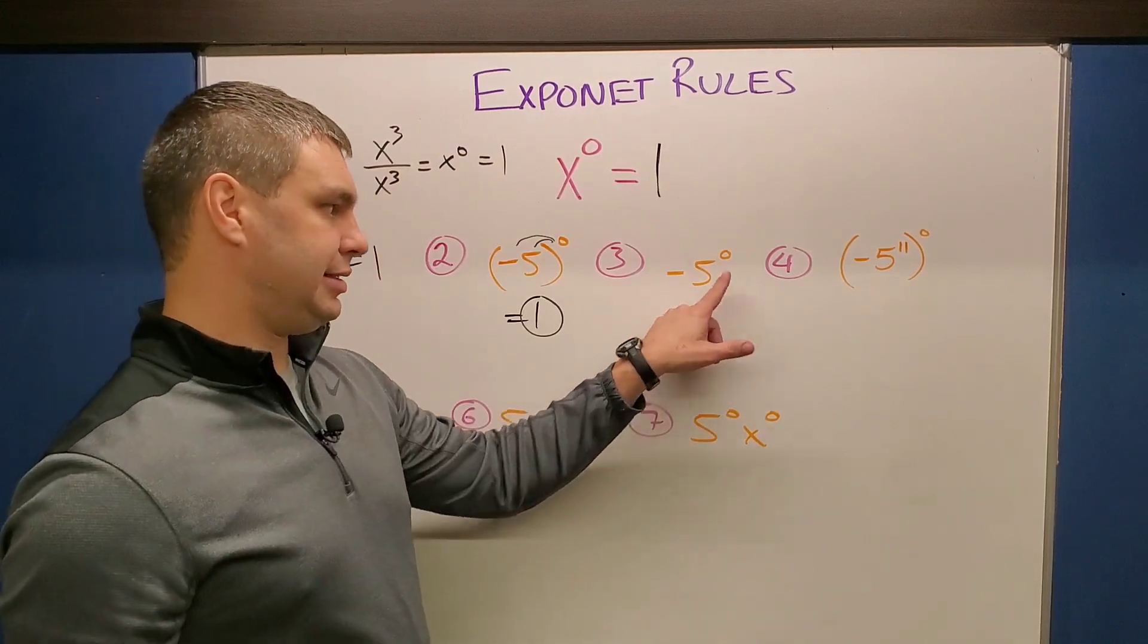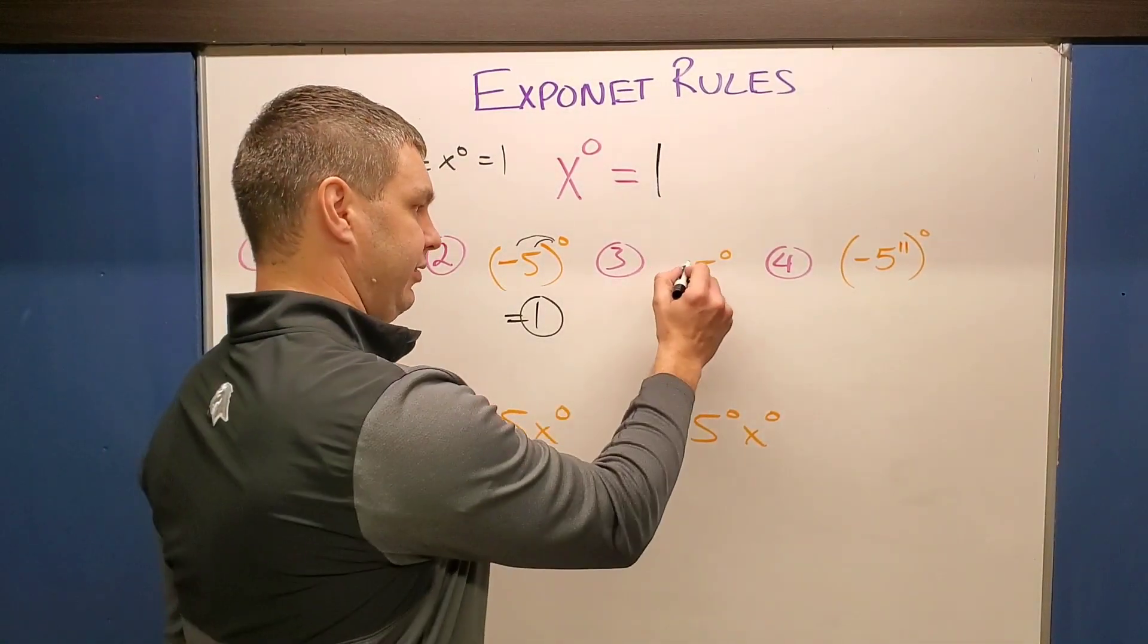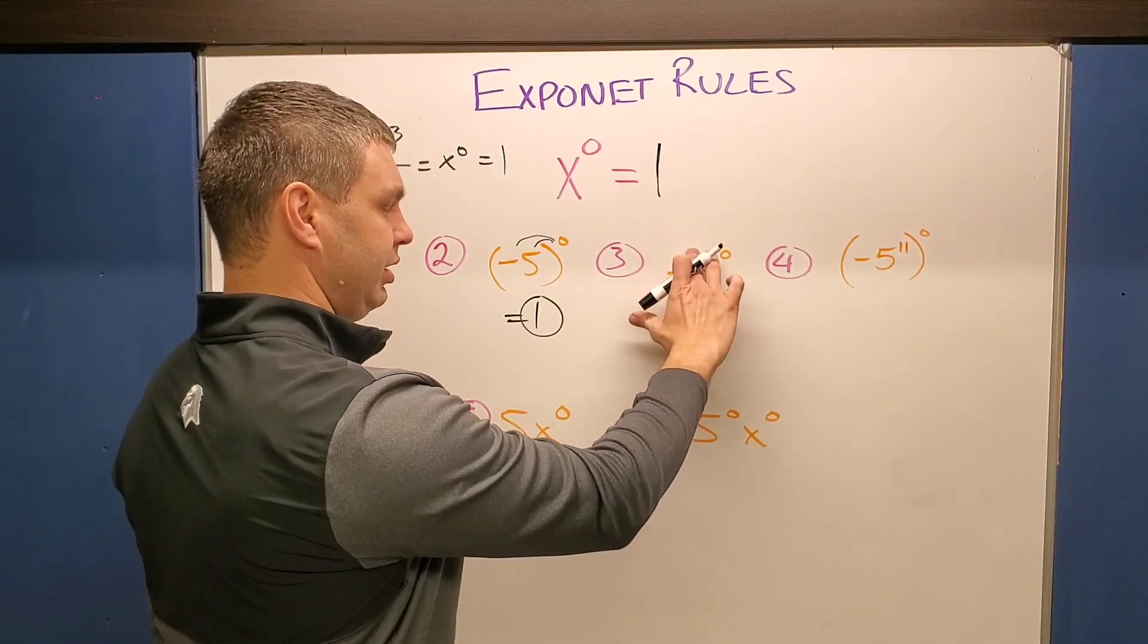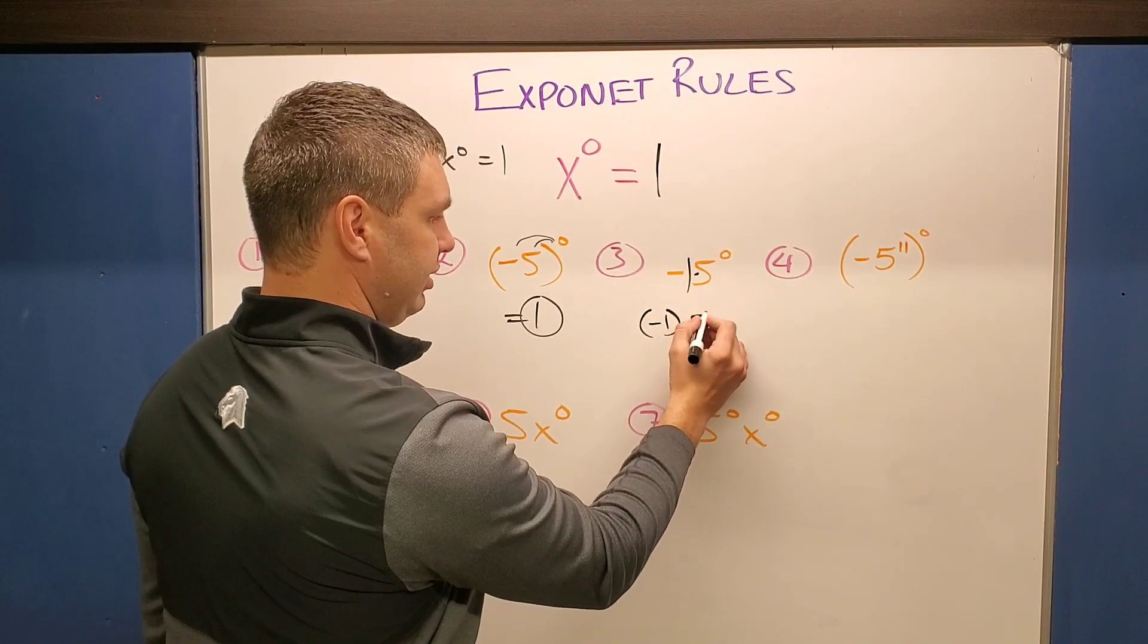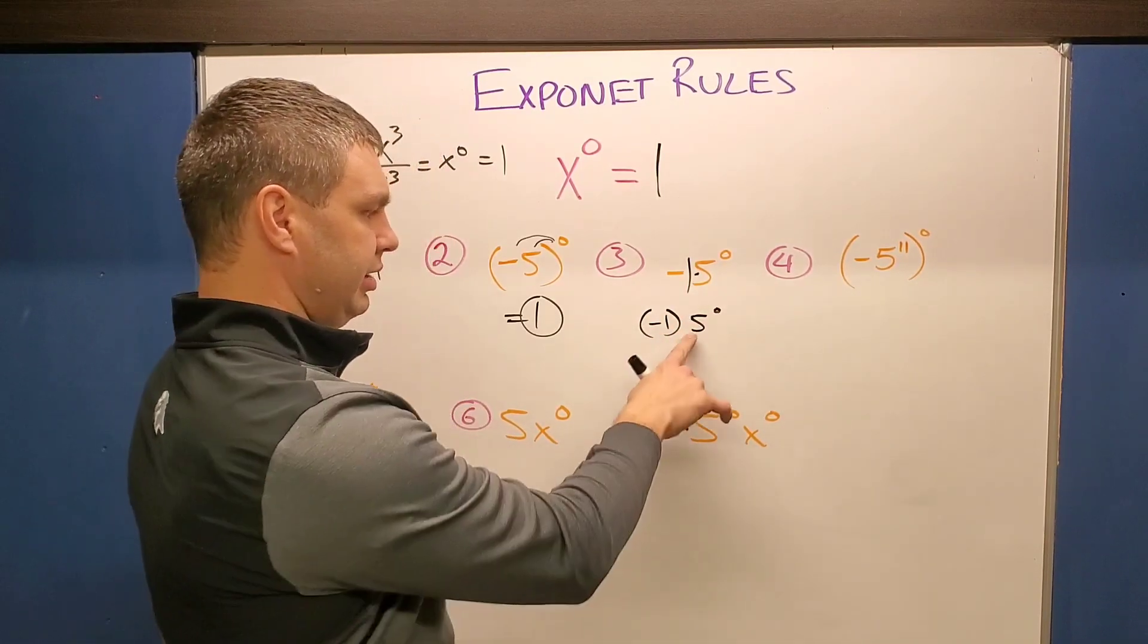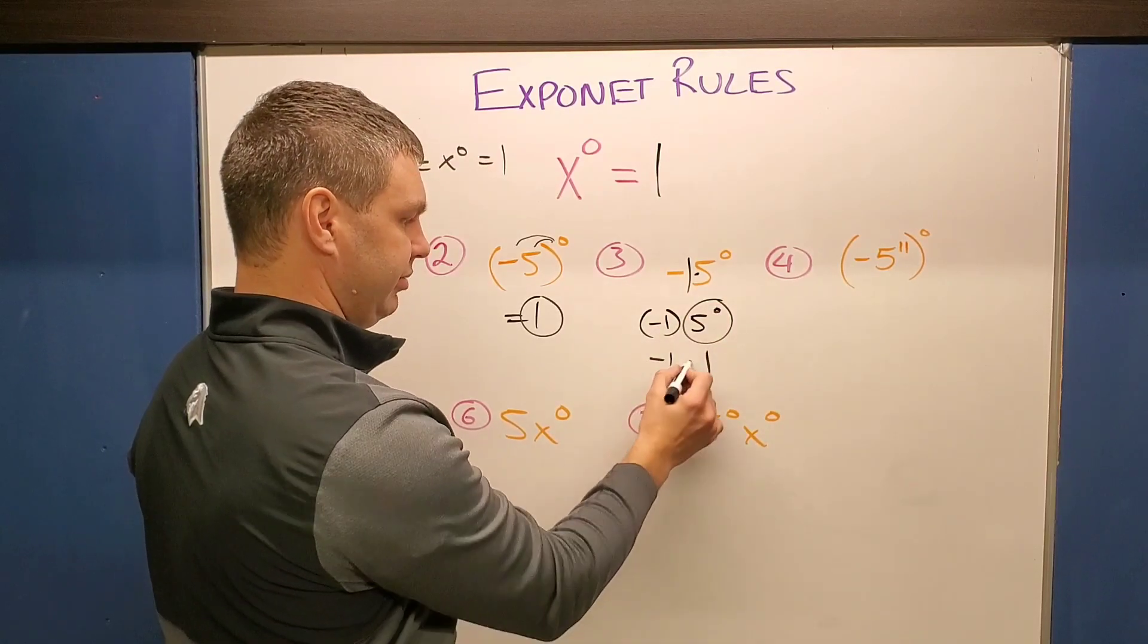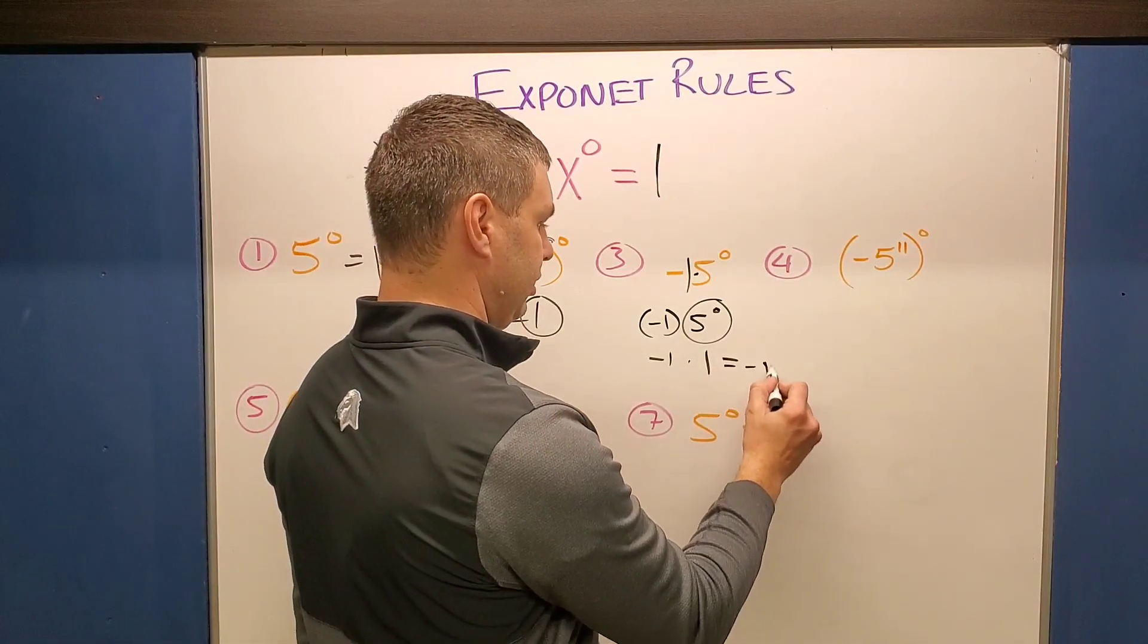Here though, it's not. The zero is being only applied to the five. That negative, if you think of this as like a negative one in front, negative one times five raised to the zero. This is going to be one, that part. This is still just a negative one. So negative one times one is negative one.